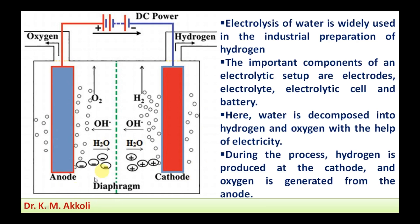For industrial application of hydrogen utilization, this method is mostly used. Whenever we supply electricity, the electrolyte splits the water into oxygen and hydrogen. The hydrogen moves towards the cathode, is collected there, and supplied. The oxygen moves towards the anode, is collected there, and supplied.